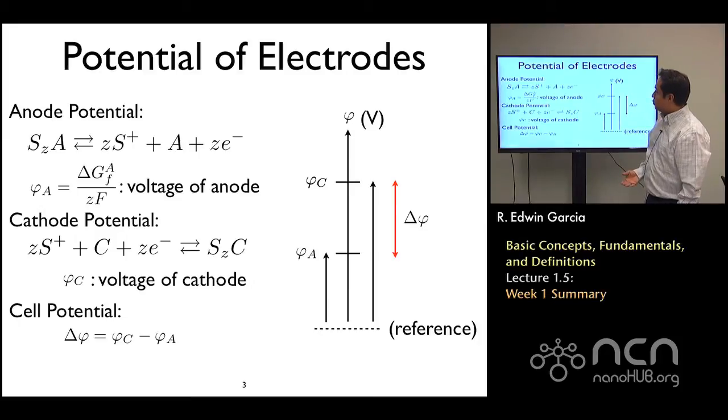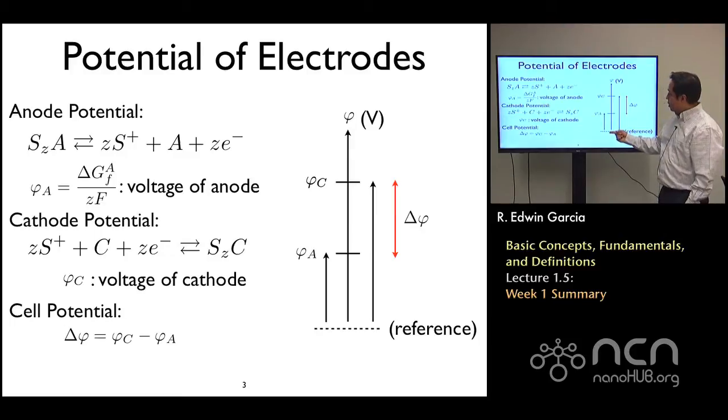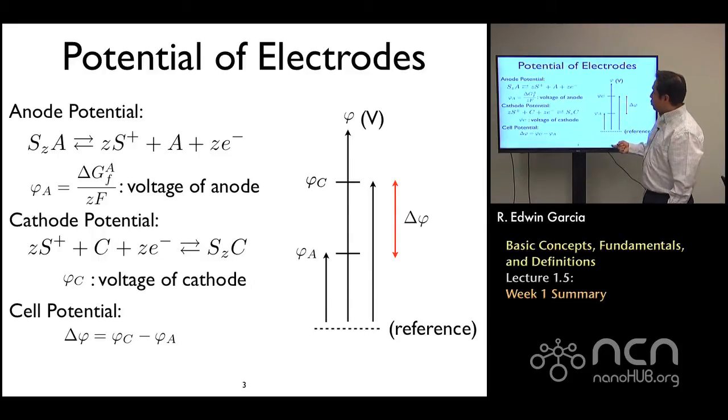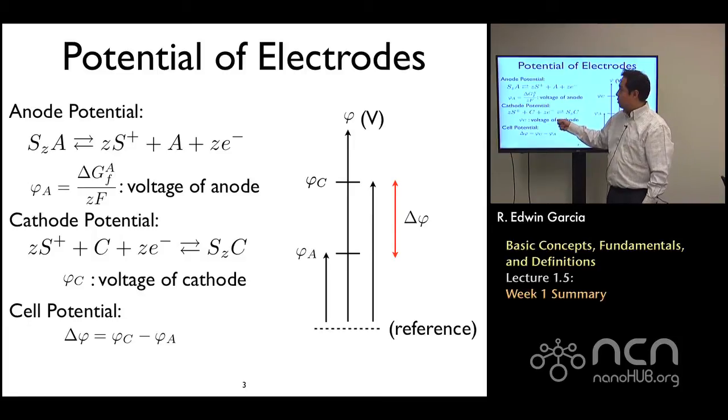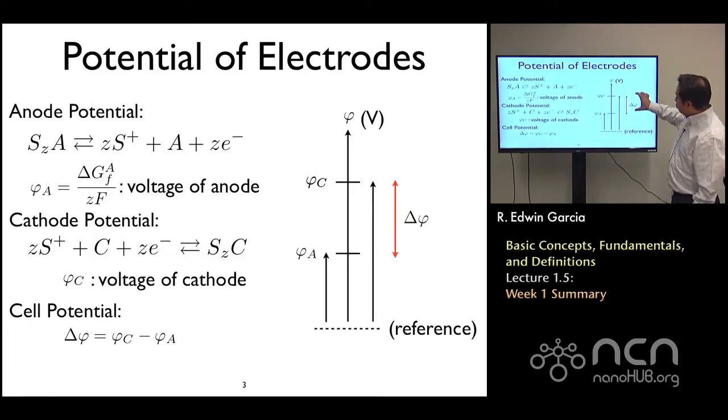Really what we expect is that with respect to some reference, we will have a voltage for the anode and a voltage for the cathode. And as these two materials are selected to maximize the potential of the cathode and minimize the potential of the anode, we should be able to maximize the voltage of the entire system. This will allow us, will give us how much energy for every charge that we use the material will deliver.